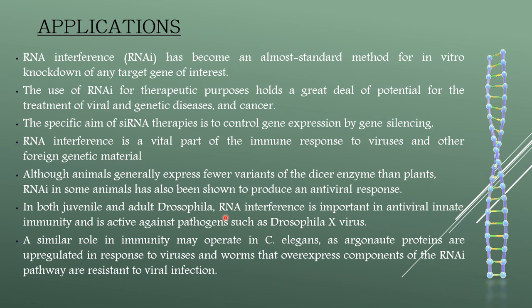In both juvenile and adult Drosophila, RNA interference is important in antiviral innate immunity and is active against pathogens such as Drosophila X virus. A similar role in immunity may operate in C. elegans, as Argonaute proteins are upregulated in response to virus, and worms that overexpress components of the RNAi pathway are resistant to viral infection.